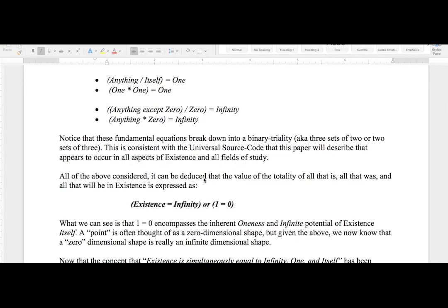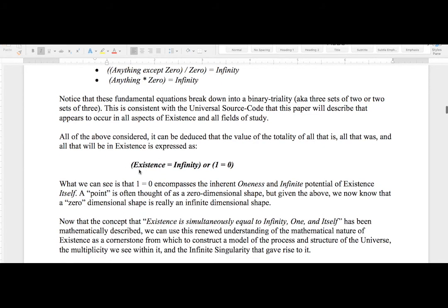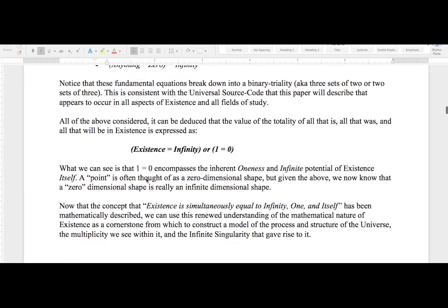All of the above considered, it can be deduced that the value of the totality of all that is, all that was, and all that will be in existence is expressed as: (Existence = Infinity) or (1 = 0). What we can see is that 1 = 0 encompasses the inherent oneness and infinite potential of existence itself.